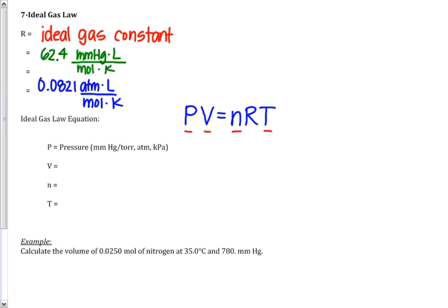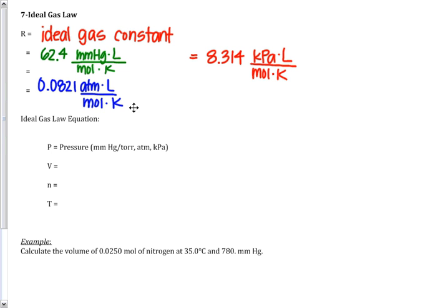The last R value is if you're in kPa. That value that you want to use for pressure in kPa is 8.314 kPa liter per mole K. So it's your job to be able to find the R values that match. However, you do not need to memorize these numbers. I will give those to you on tests and quizzes. So these values you see, 62.4, 0.0821, and 8.314, you do not need to memorize them.